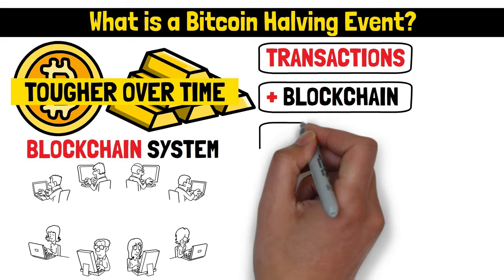Here's how it works. Bitcoin operates on a blockchain system where miners use powerful computers to solve complex mathematical problems. When they solve these problems, they process transactions and add them to the blockchain. In return, they earn new Bitcoins. Every 210,000 blocks or roughly every four years, the reward that miners receive for discovering a new block is cut in half. This is what we call halving.